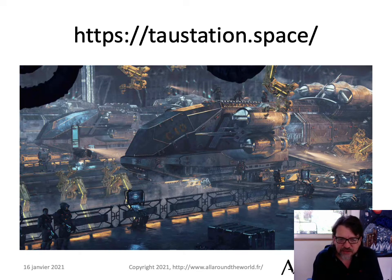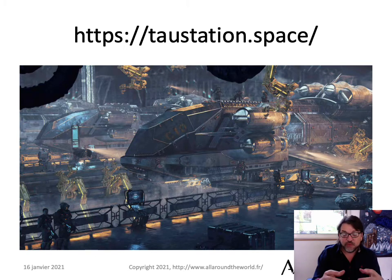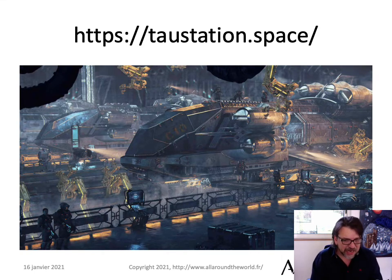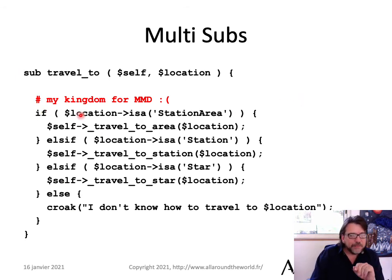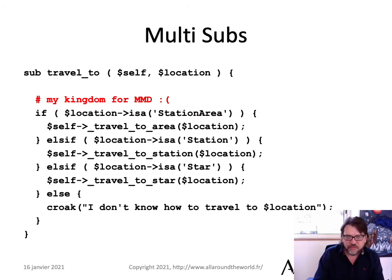TauStation.Space is a narrative MMORPG that runs in your browser — very accessible and free to play, for people who love science fiction and love to read. But sometimes the code has been a little bit frustrating. For example, you can travel to a different space station area, a different station, or a different star system. The code used to look like this: if location is a station area, travel to area; else if it's a station, travel to station; else if it's a star, travel to star; else croak — I don't know how to travel to location. The comment 'my kingdom for MMD' was actually in the original version of this code.